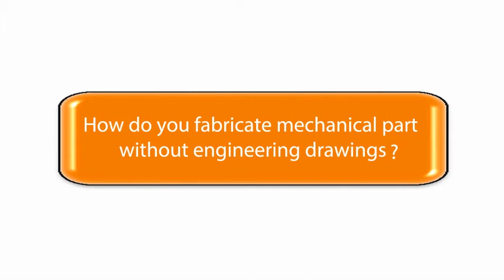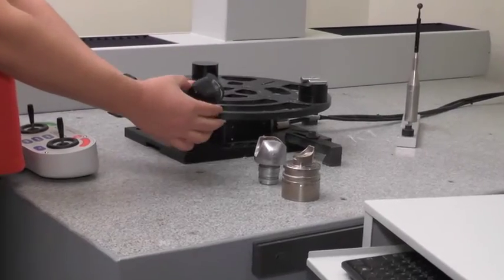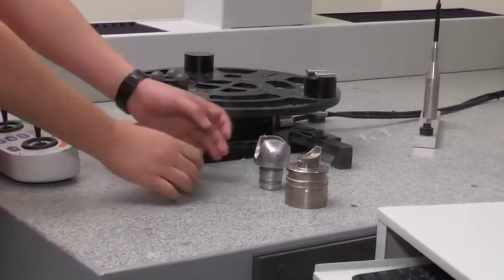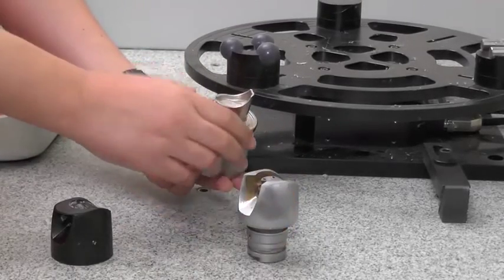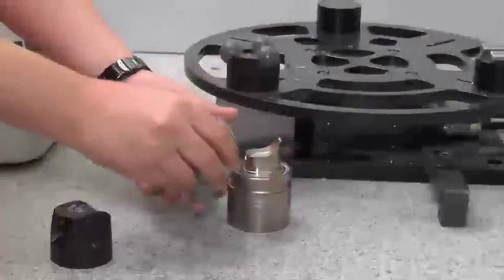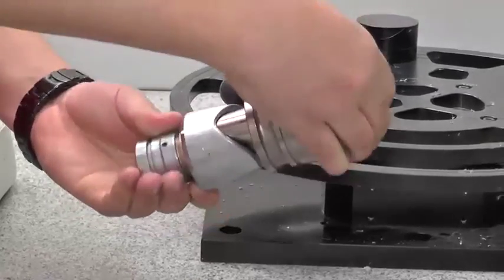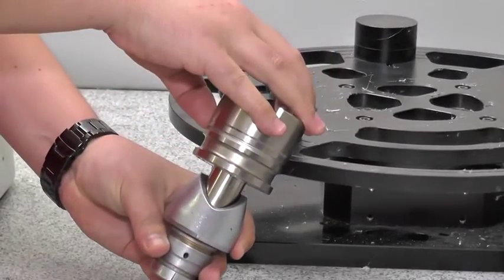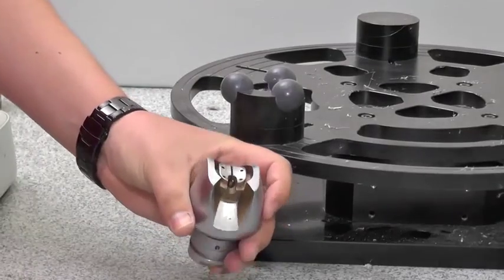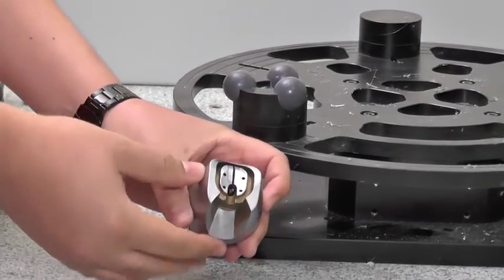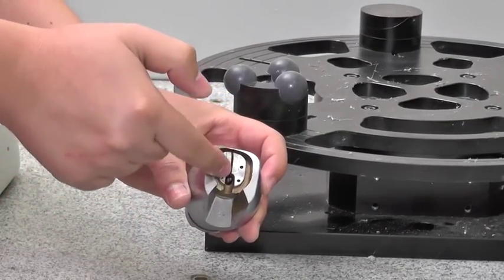How do you fabricate mechanical parts without engineering drawings? Here we have a final product — the end cap for an aerosol bottle. We need two parts of the mold: a top and a bottom. The plastic is injected from one end and fills the base mold. The features of this part are not uniform — we have many freeform surfaces and details that cannot be captured easily using a standard caliper.